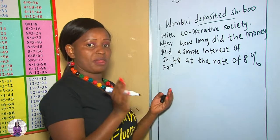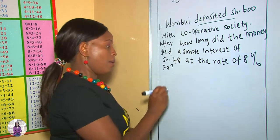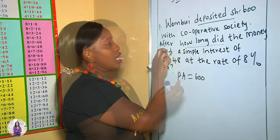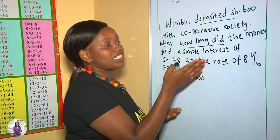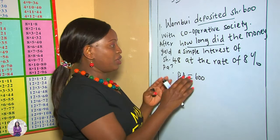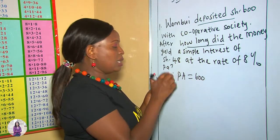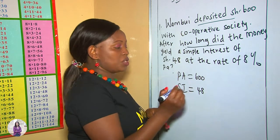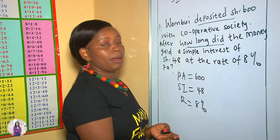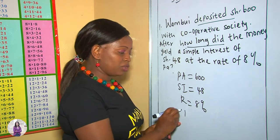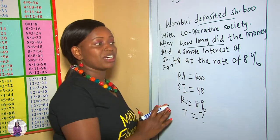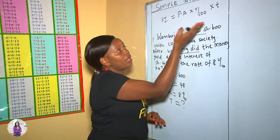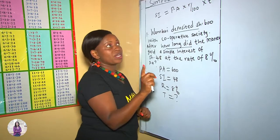The money deposited is what we call the principal amount. Therefore our principal amount is 600. 'How long' is a question of time, so we are looking for the unknown, which is the time. We are given the principal amount, we are given the simple interest of 48, and we are given the rate of 8% per annum — per annum means on a yearly basis. So our question is about time.